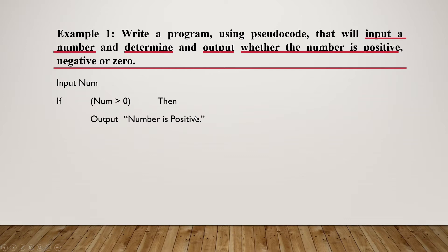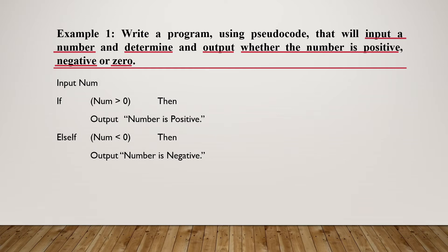Otherwise, if the number is not zero, for a number to be negative it should be less than zero. So we use an ELSE IF statement: else if the number is less than zero, then output 'number is negative.' If it is neither greater than nor less than zero, the number is automatically zero, so we output 'number is zero.' Then we end our IF statement and program.